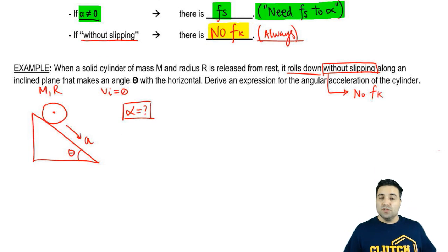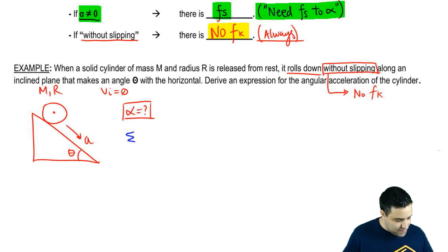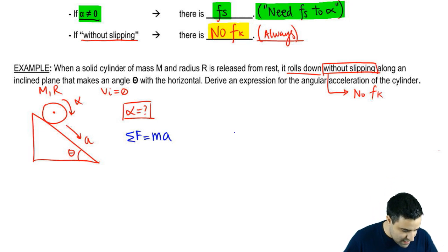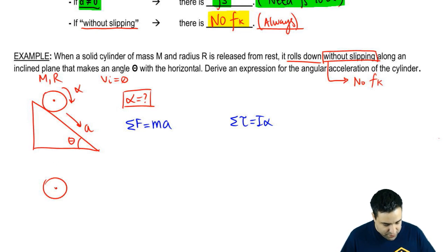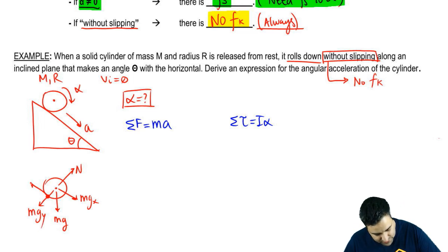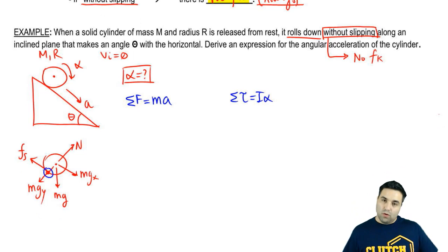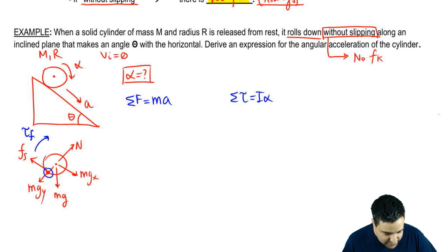How do we do this? This is an acceleration problem, so we use F equals MA — but there's also rotation, so we use F equals MA and torque equals I-alpha, both for the same object because it has two motions. One object with two motions means two equations. Now let's look at the forces: I have MG pulling down, decomposed into MGX and MGY. I have a normal force, and I have static friction. In terms of torques, the only torque comes from static friction.